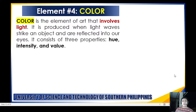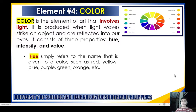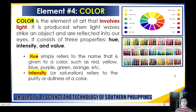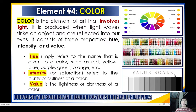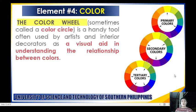Color is the element of art involving light; it is produced with light waves reflected into our eyes. It consists of three properties: hue, intensity, and value. Hue simply refers to the name given to a color—such as red, yellow, blue, purple, green, or orange. Intensity refers to saturation—the purity or dullness of a color. Value is the lightness or darkness of a color, from dark blue to light blue. Artists and interior decorators use the color wheel as a visual aid to understand relationships between colors.